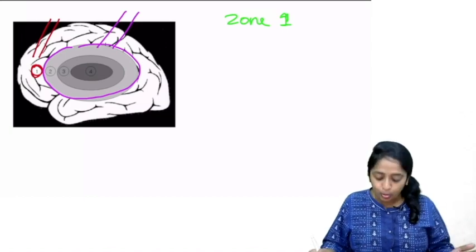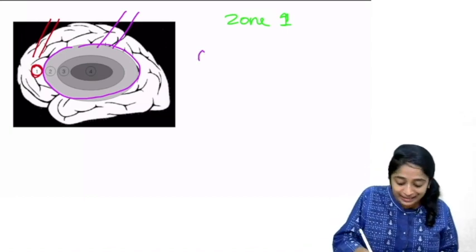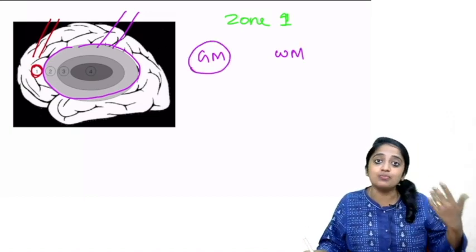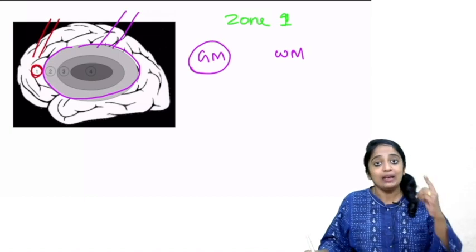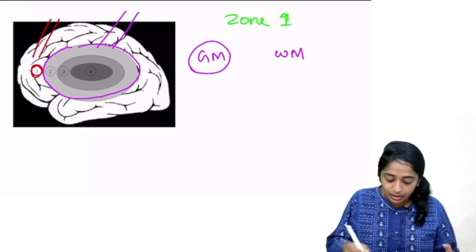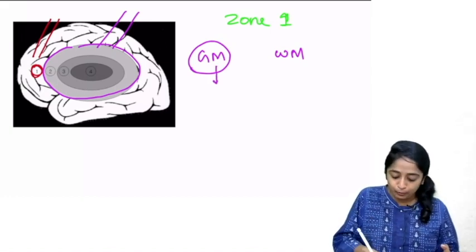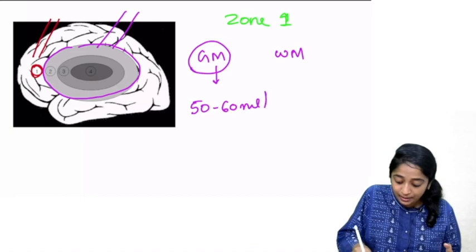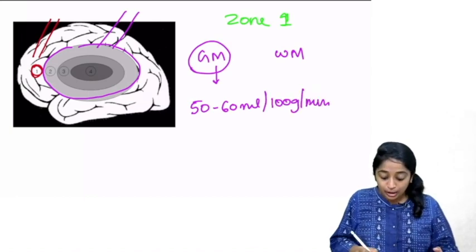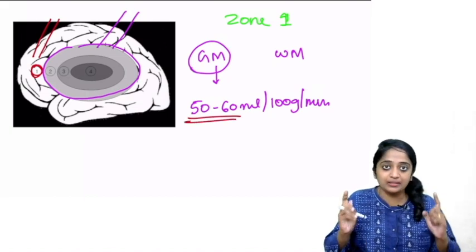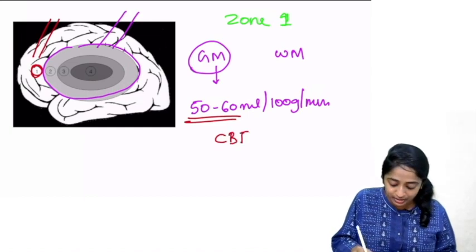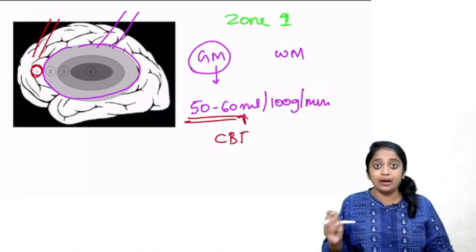What is the normal blood flow in zone 1? It differs between grey matter and white matter. The grey matter or cortex has a higher metabolic rate and is more affected when a clot occurs. The normal blood flow for grey matter is in the range of 50 to 60 ml per 100 gram per minute — much less in white matter. For all practical purposes, remember this value: region 1 has normal CBF of 50–60 ml per 100g per minute.